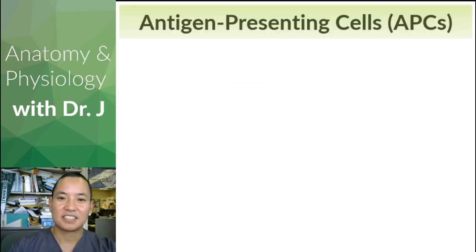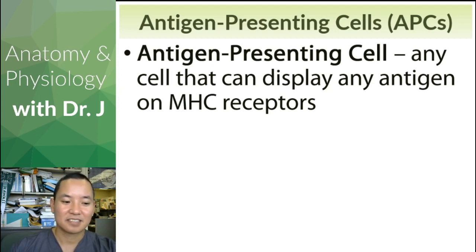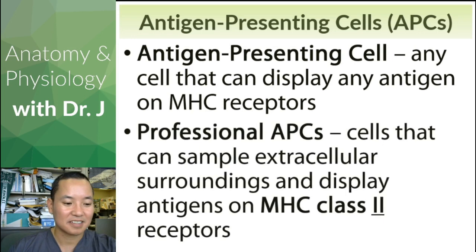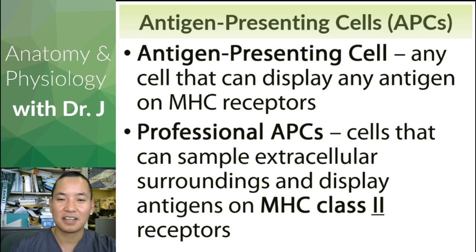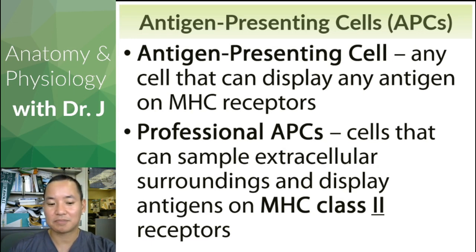Antigen presenting cells, or APCs — these are any cells that can display an antigen on MHC receptors. If it has an MHC class 1 receptor, it can present an antigen, which is most of your nucleated cells. Then you have professional APCs — these not only display antigens but actively sample their extracellular surroundings and display them on MHC class 2 receptors. All nucleated cells can display MHC class 1 receptors, but professional APCs make exclusive use of MHC class 2 receptors — these are special.